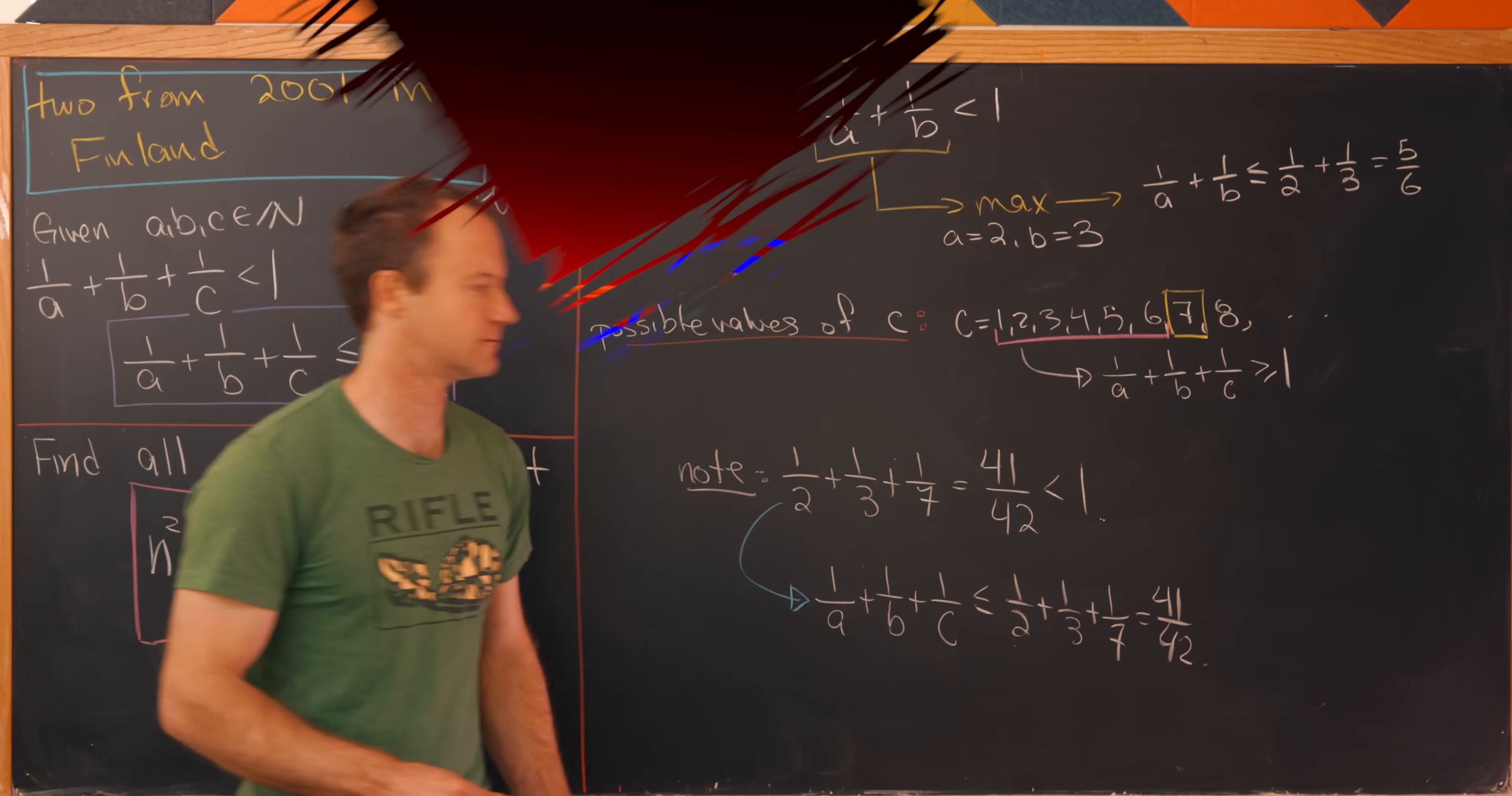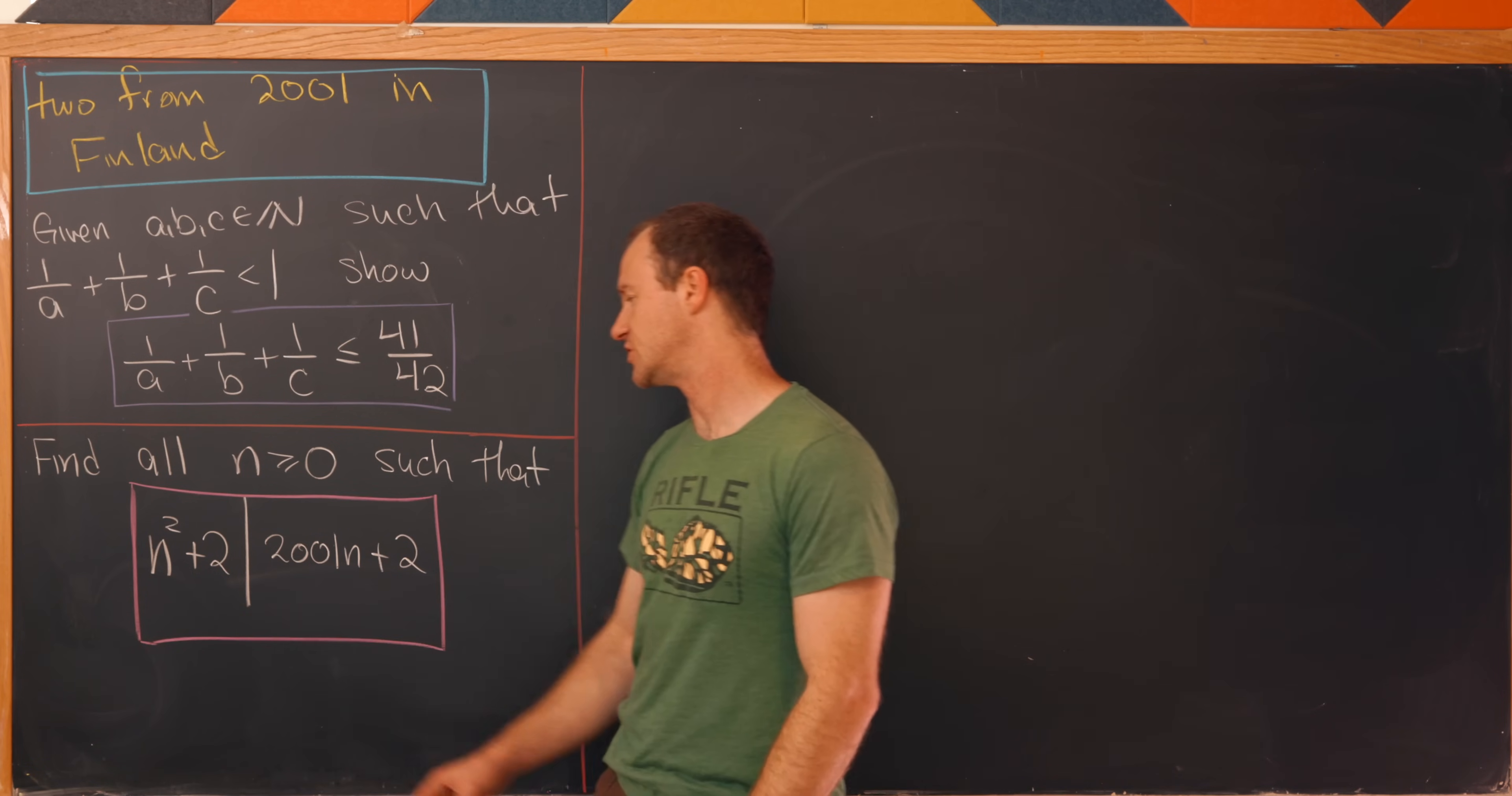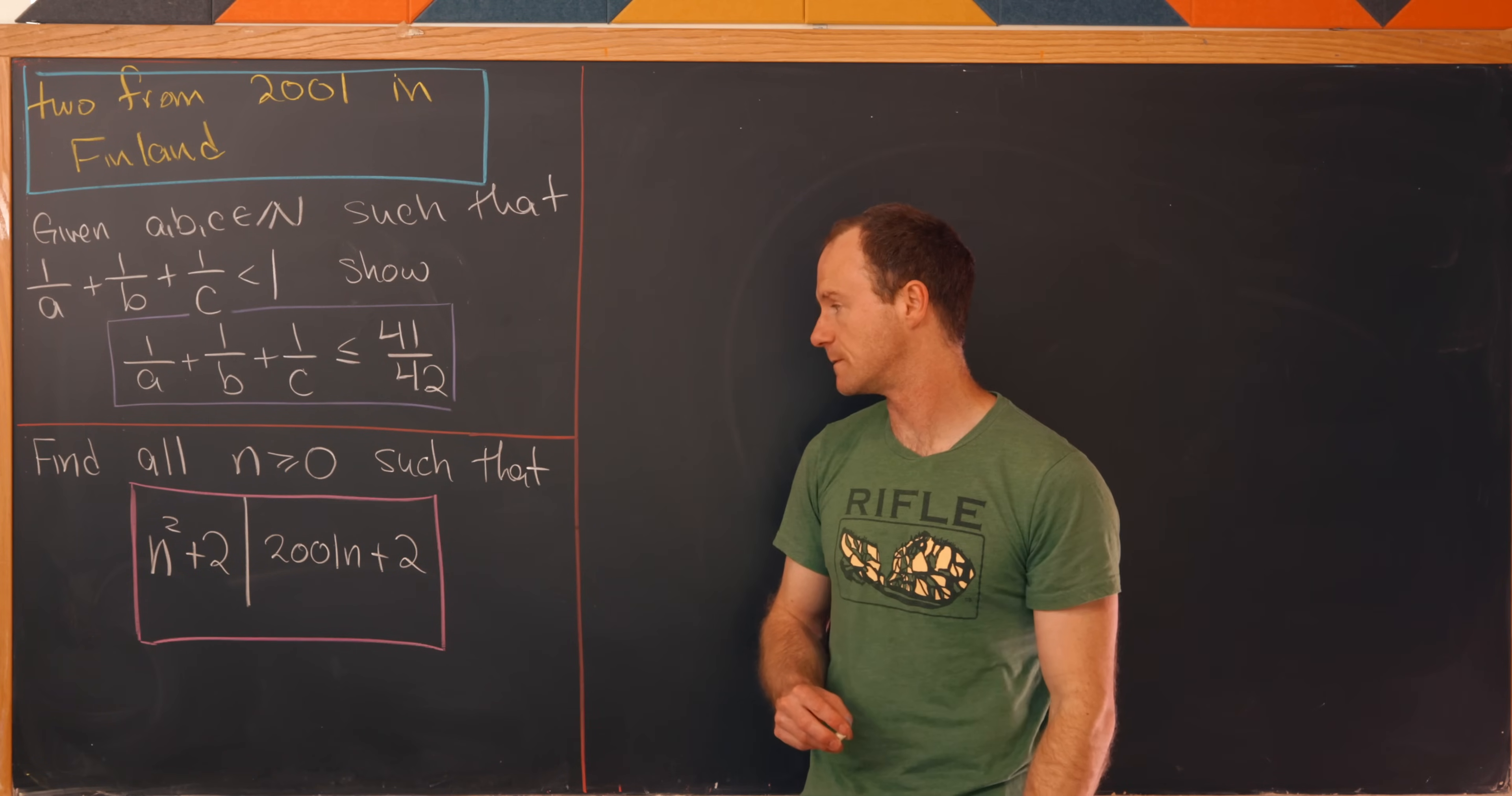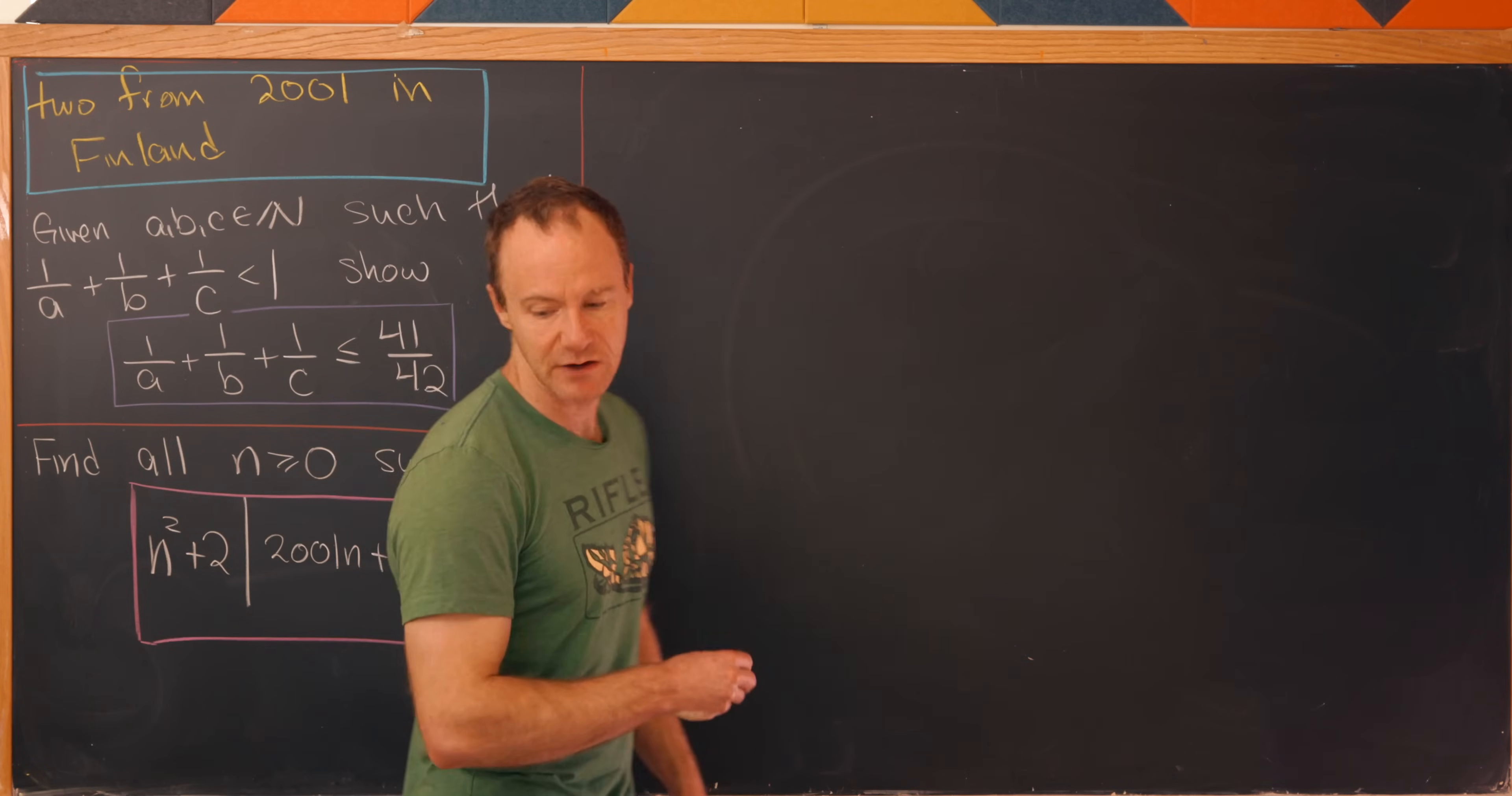Let's move on to the second problem. For our second problem, we'd like to determine all non-negative integers n satisfying this divisibility condition. So you have n² + 2 divides 2001n + 2. So when I say divides, I mean it's a factor of 2001n + 2. Our idea here will be to use this divisibility condition to somehow get rid of the n's in one side of the equation.